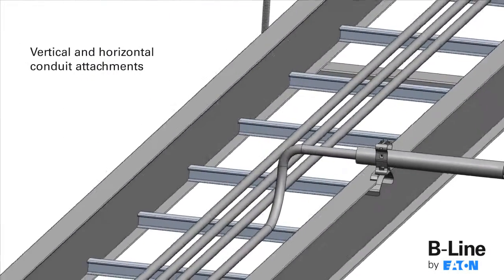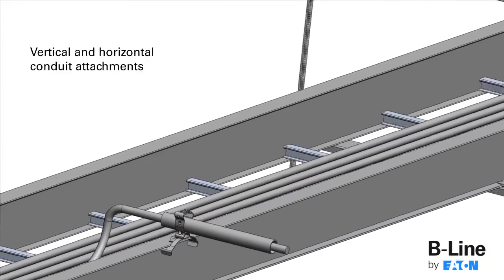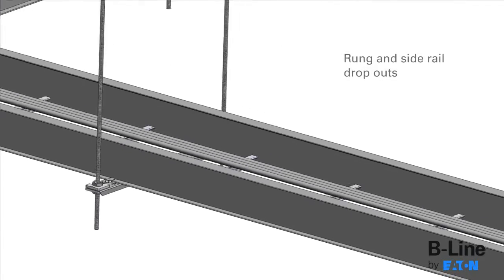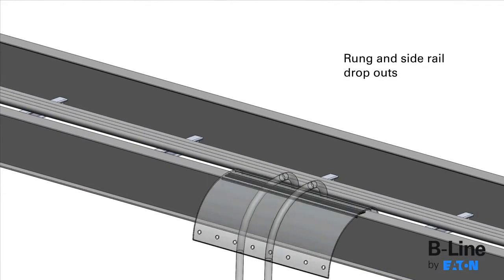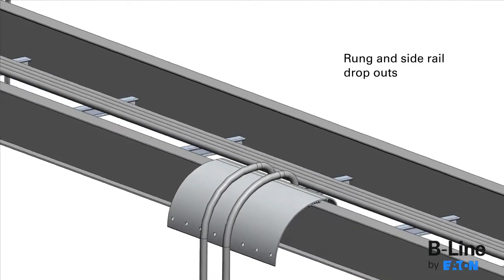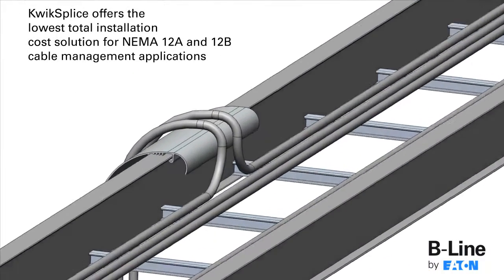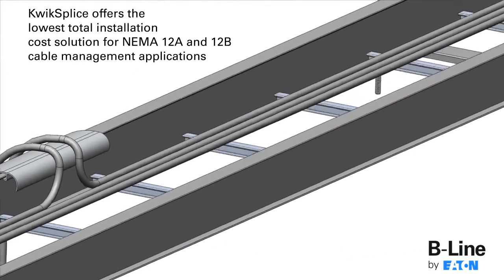To properly support and protect cables exiting the cable tray system, installers can utilize B-Line vertical and horizontal conduit attachments or rung and side rail dropouts that help maintain a cable's proper bend radius for NEMA 12A and 12B cable management applications.